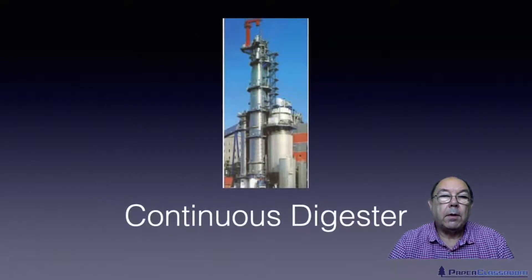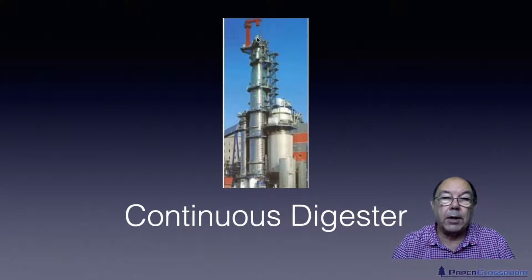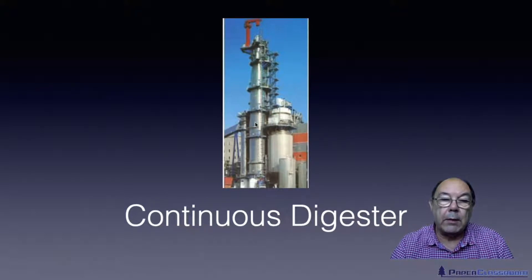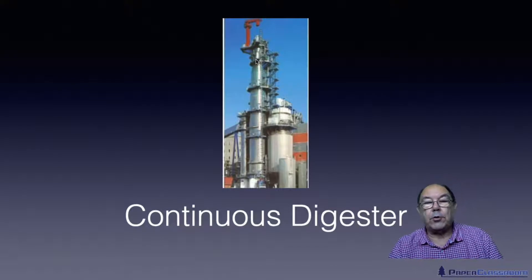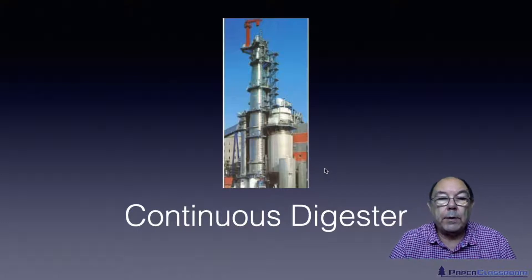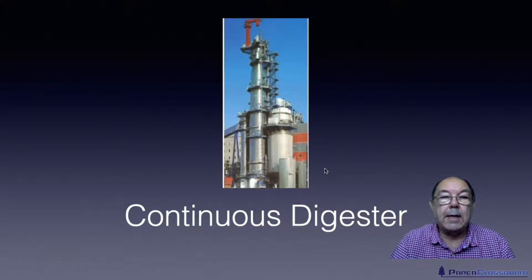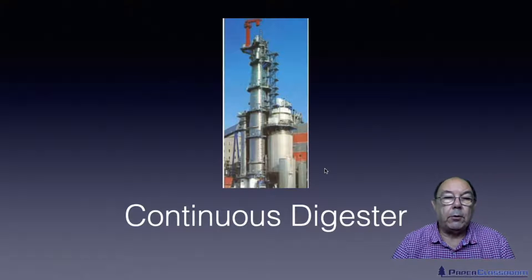This is a typical modern-day pulper — this is called a continuous pulper. We bring in the pulping chemicals and the fiber at the top of the tower and over several hours they work their way down, where they're subject to treatment with the white liquor. They're washed and cleaned and then come out at the bottom.